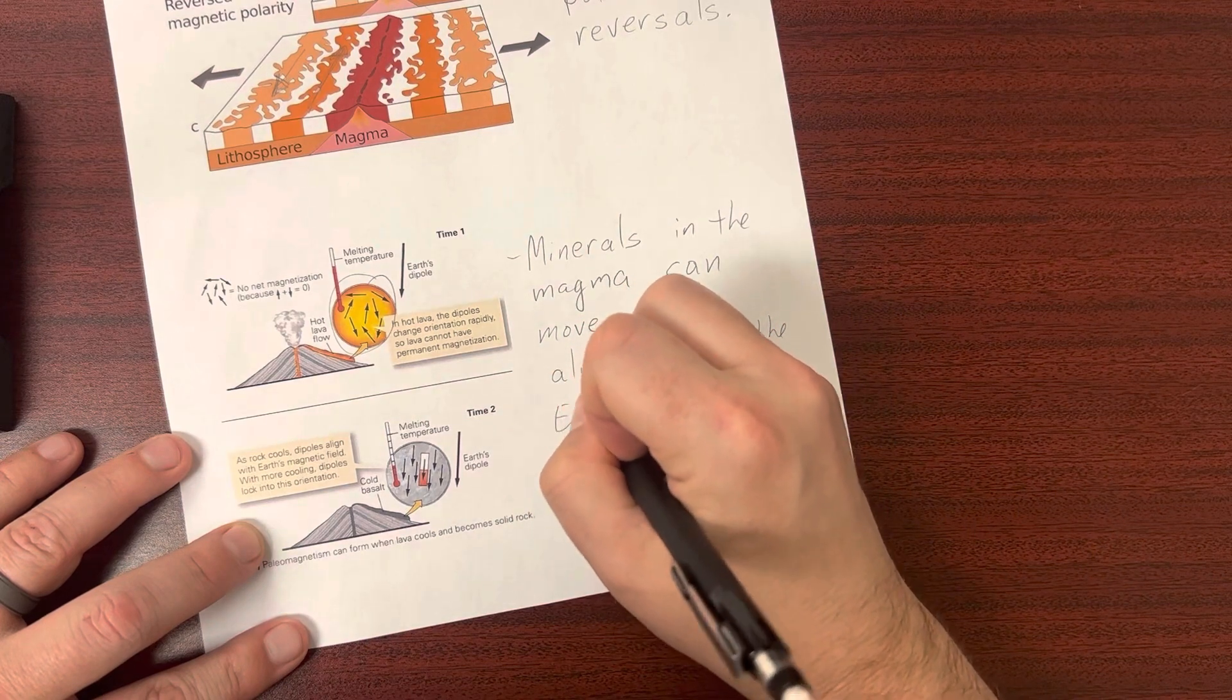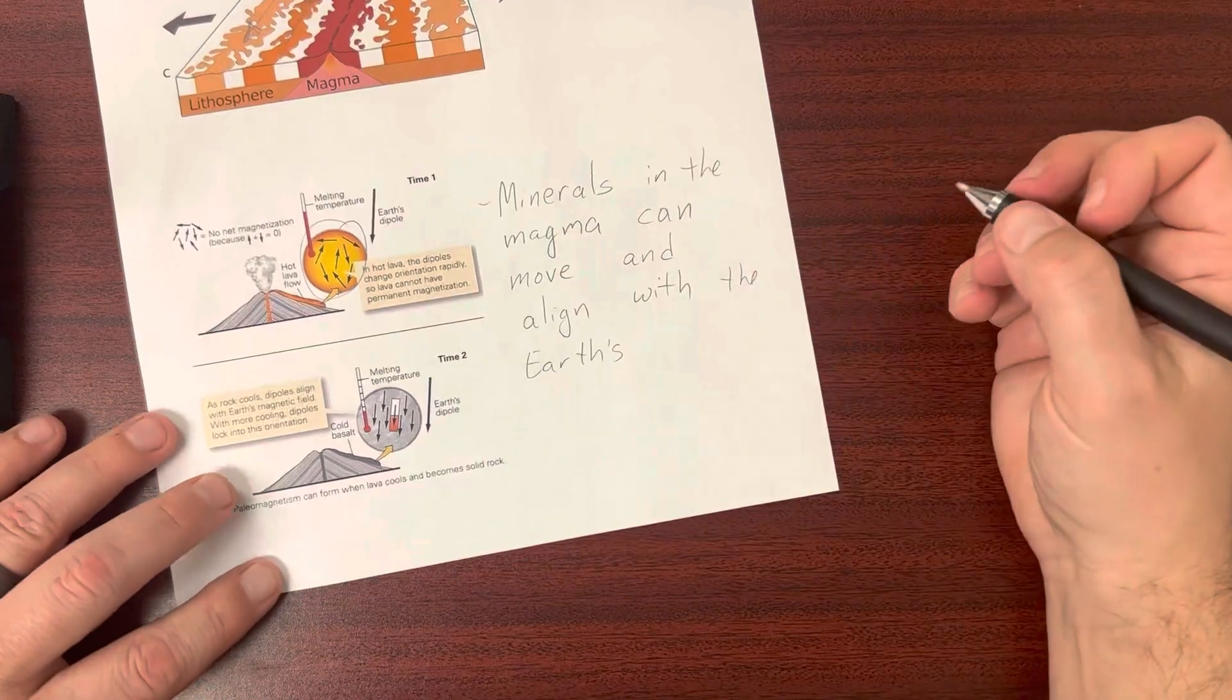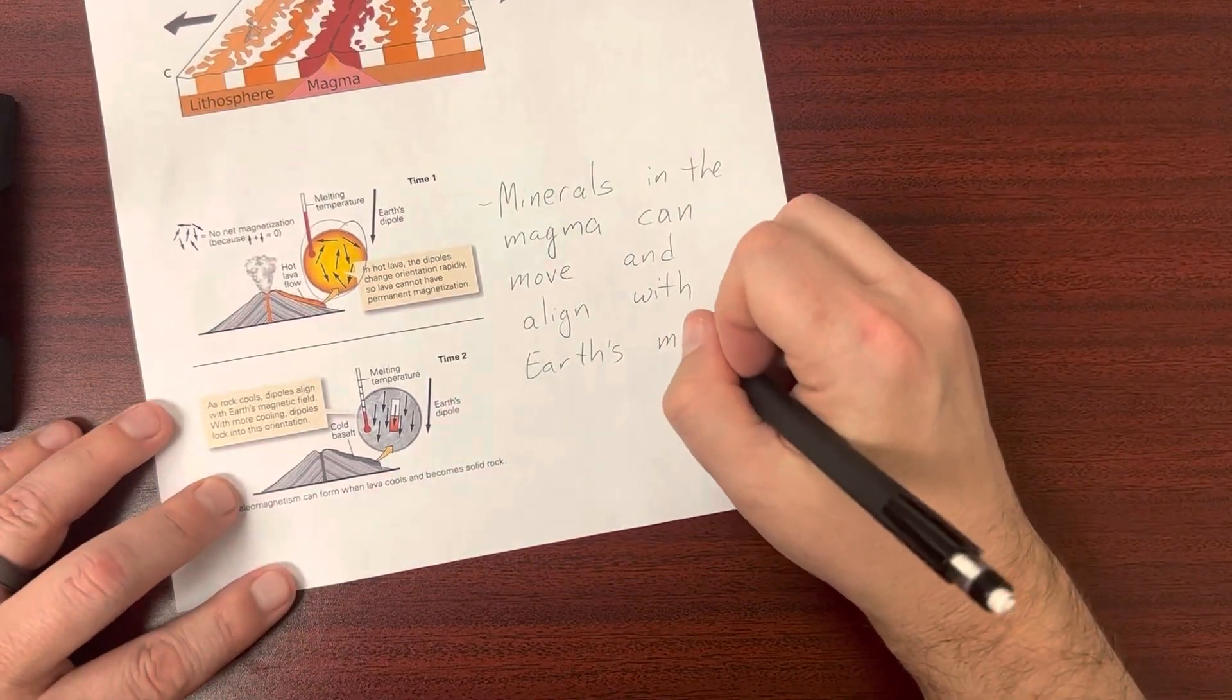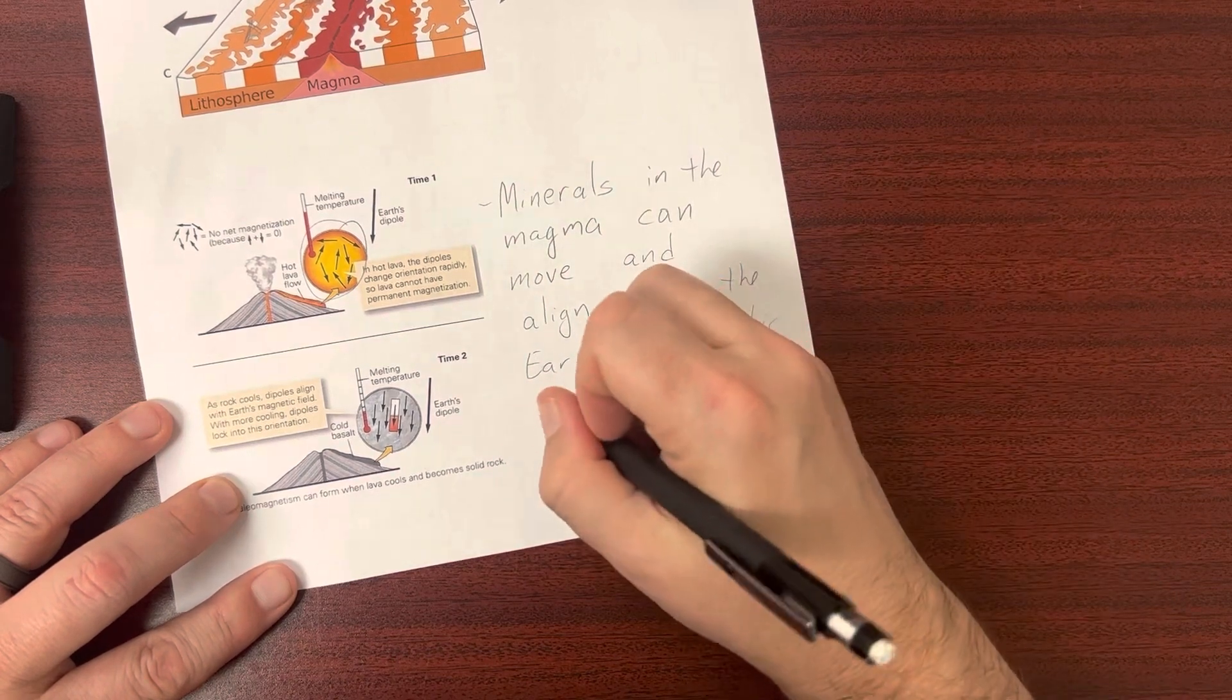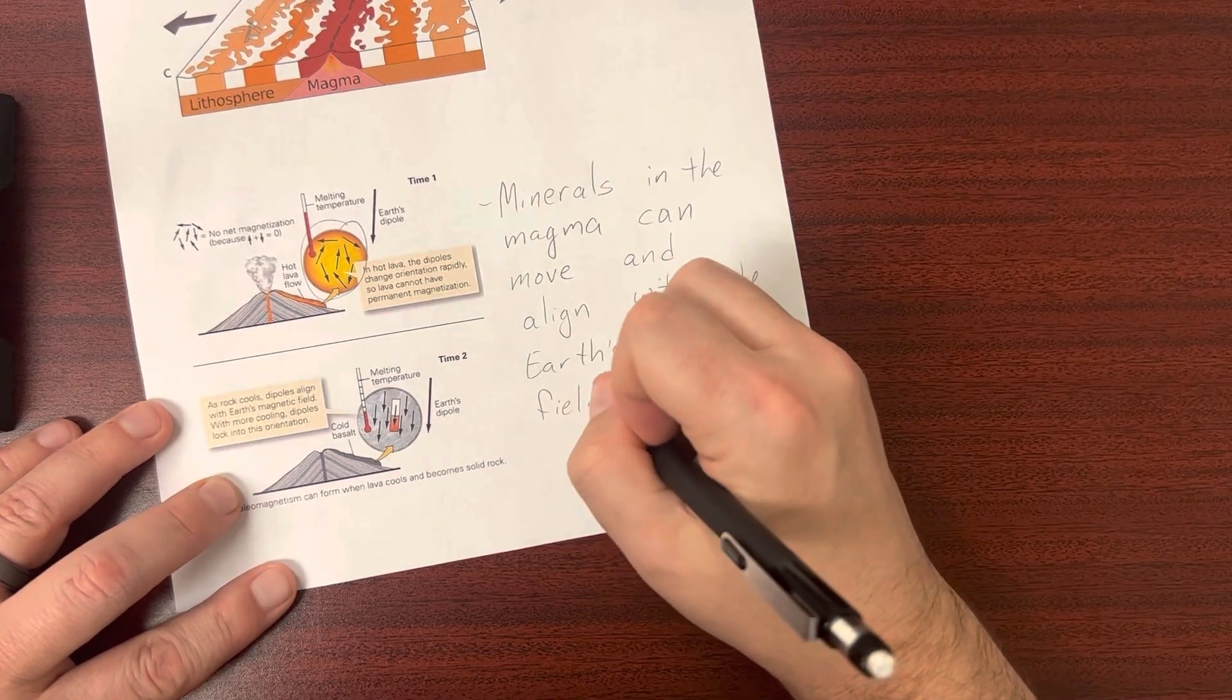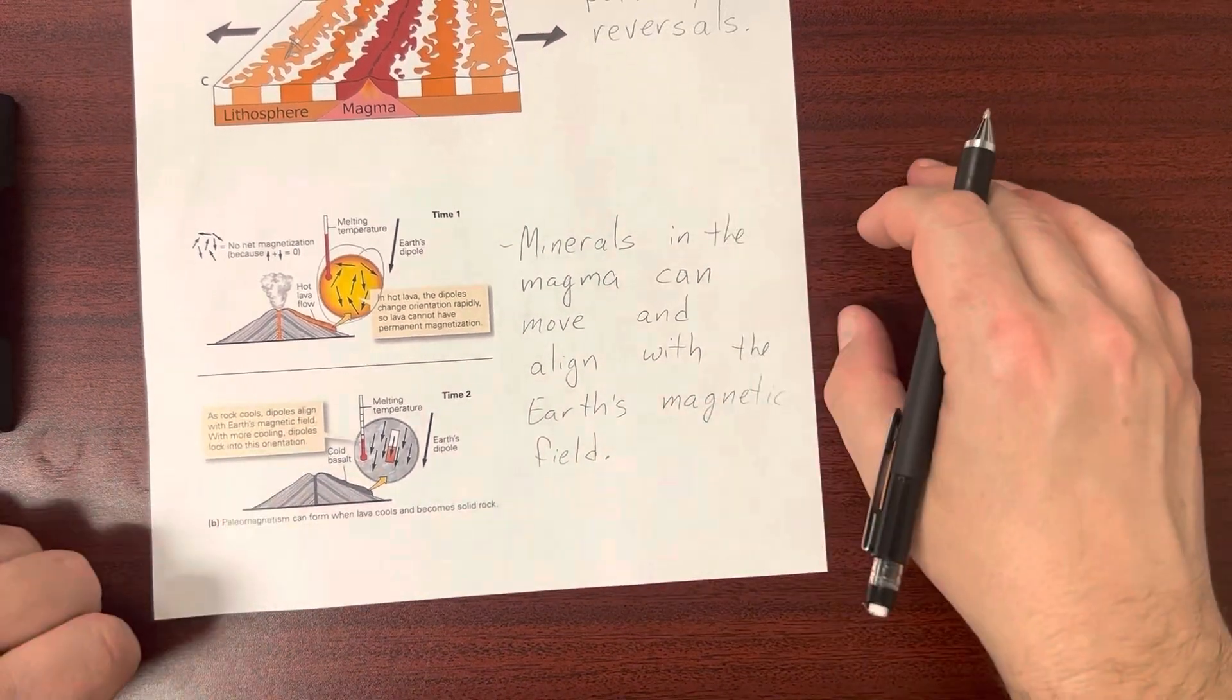And then once the magma solidifies, they're stuck in place. So we can see this patterning across the whole ocean floor. This is just another piece of evidence that backs up this idea of seafloor spreading.